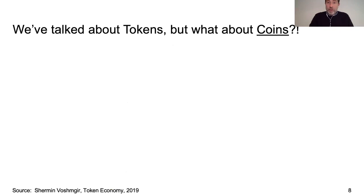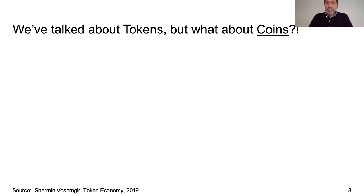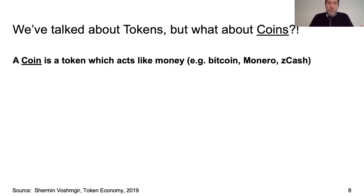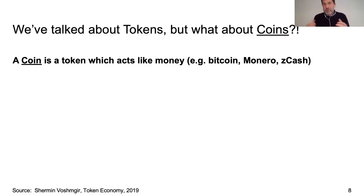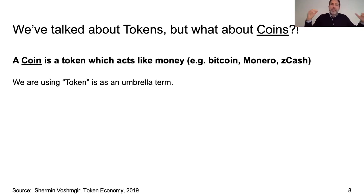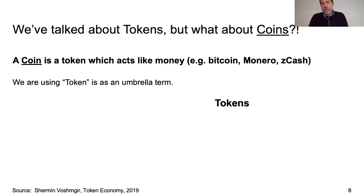Now we've talked about tokens, but what about coins? In the crypto space, you always hear both words — Bitcoin, Filecoin, and so on. What I would like to suggest in terms of taxonomy is to define a coin as a token which acts like money — something like Bitcoin, Monero, Zcash, and so on. And to use 'token' as an umbrella term for both money tokens (coins) and all other tokens.